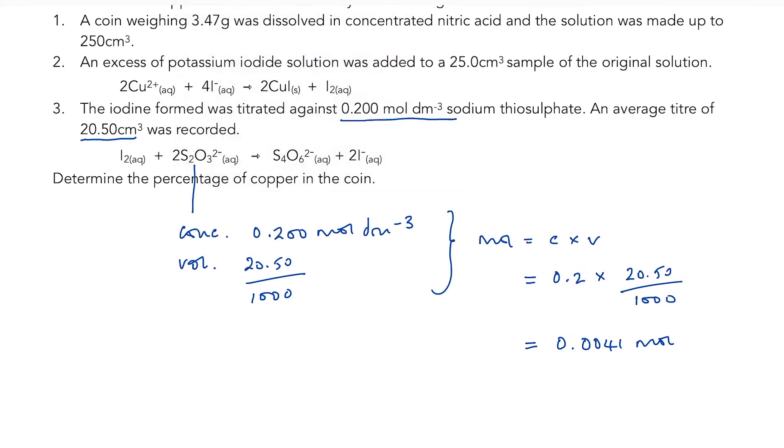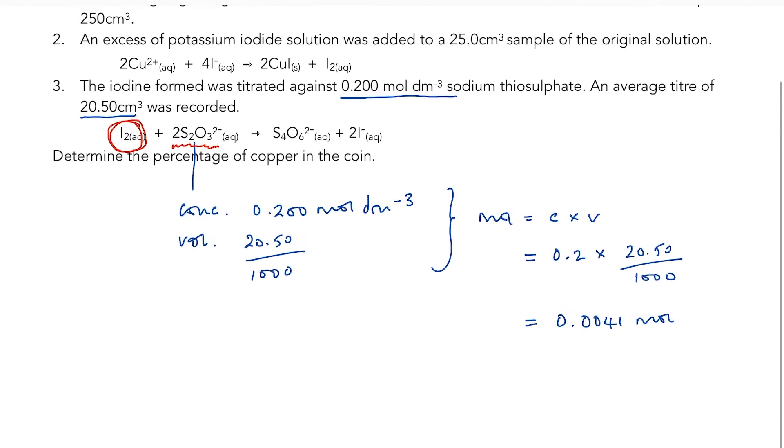If I know the number of moles of thiosulfate, then it's very straightforward to work out how much iodine was produced in that first reaction. So what we have here is iodine to thiosulfate. I know it is a 1 to 2 ratio. I know that I didn't have two moles of thiosulfate. I only needed 0.0041 to complete my titration. The number of moles of iodine is 0.00205, exactly half. And the key here is that all of this iodine is the result of the reaction with copper ions in the first reaction.